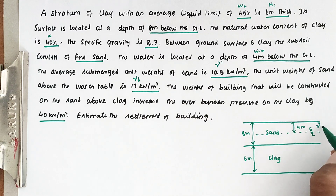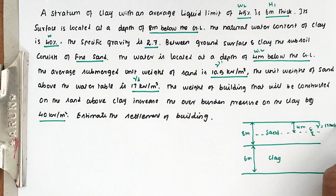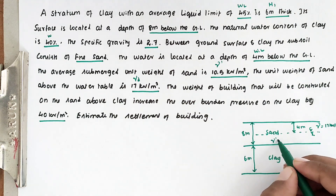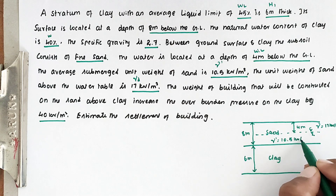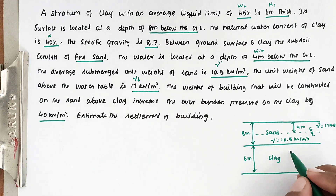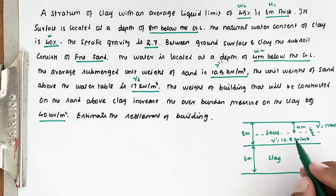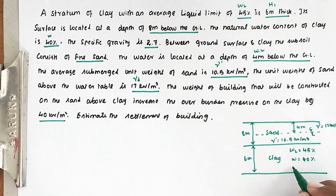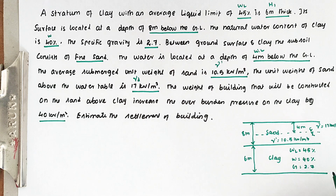Above the water table, the unit weight gamma is 17 kN/m³. Below the water table, gamma-saturation is 10.5 kN/m³. For the clay layer, the given data is: liquid limit WL is 45%, water content W is 40%, and specific gravity G equals 2.7. These are all the given values.